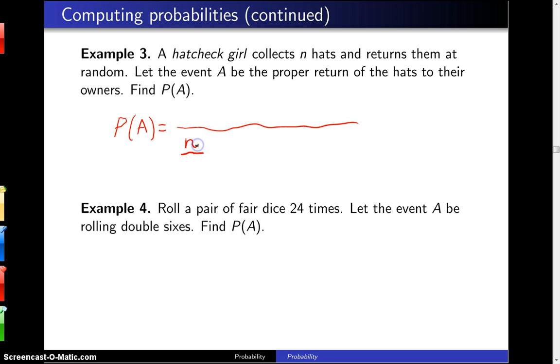The first hat can be returned N different ways. The second hat can be returned N minus 1 different ways, and this goes all the way down to 2, then finally the last hat can only go back one way.